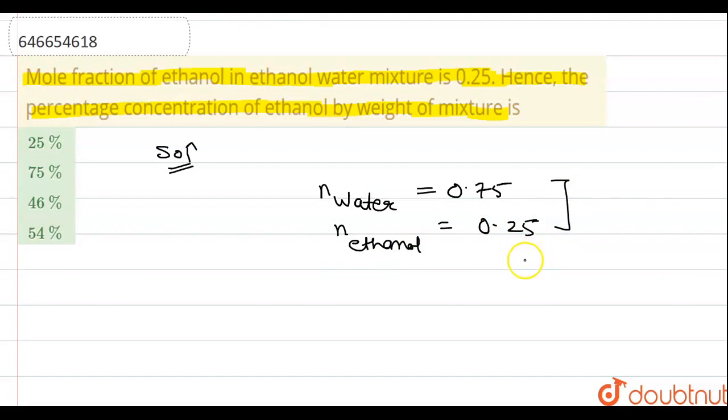The molar masses of ethanol and water are 46 and 18. You know that molar mass of water is 18 and molar mass of ethanol is 46.